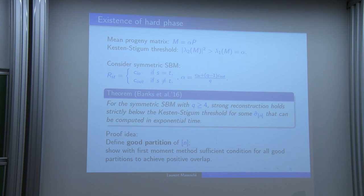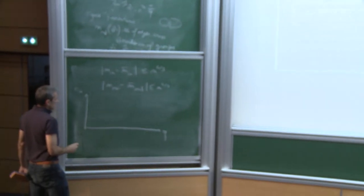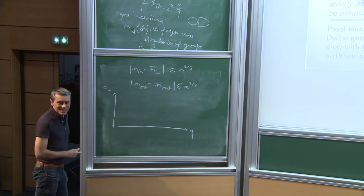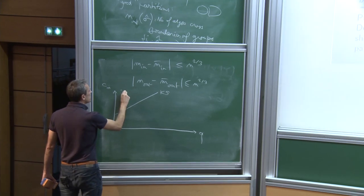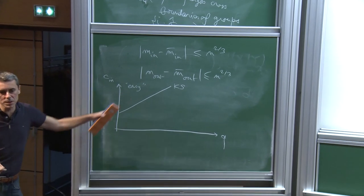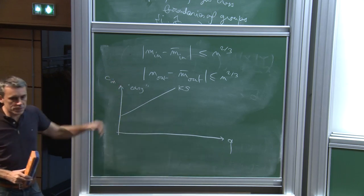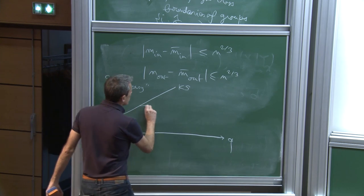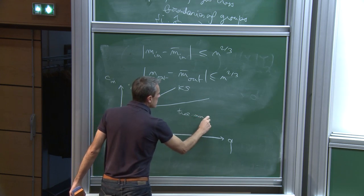Above the Kesten-Stigum threshold, there's an inspiring conjecture by Krzakala and co-authors in 2011: if you initialize belief propagation with random distributions and let it run, it will converge to fixed points with non-vanishing mutual information between the true spins and the fixed point distributions. Numerically it appears true, but it's not proven — characterizing sharply the dynamics of BP in these models is very hard. The intuition: in the symmetric case, starting from uniform distribution nothing happens. If you perturb slightly, symmetry breaking takes place, one permutation wins, and you end up at a fixed point that predicts spins correctly up to that permutation.